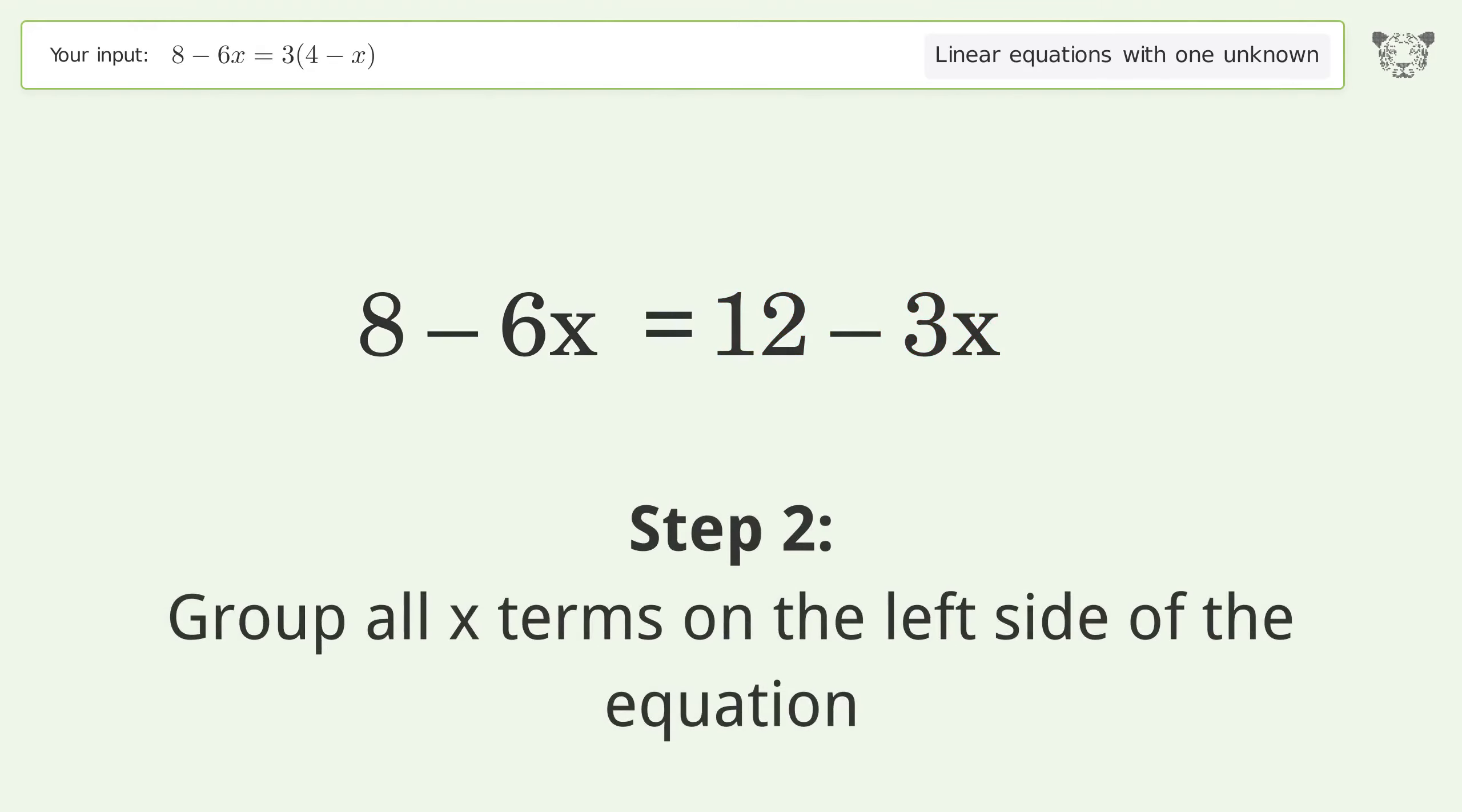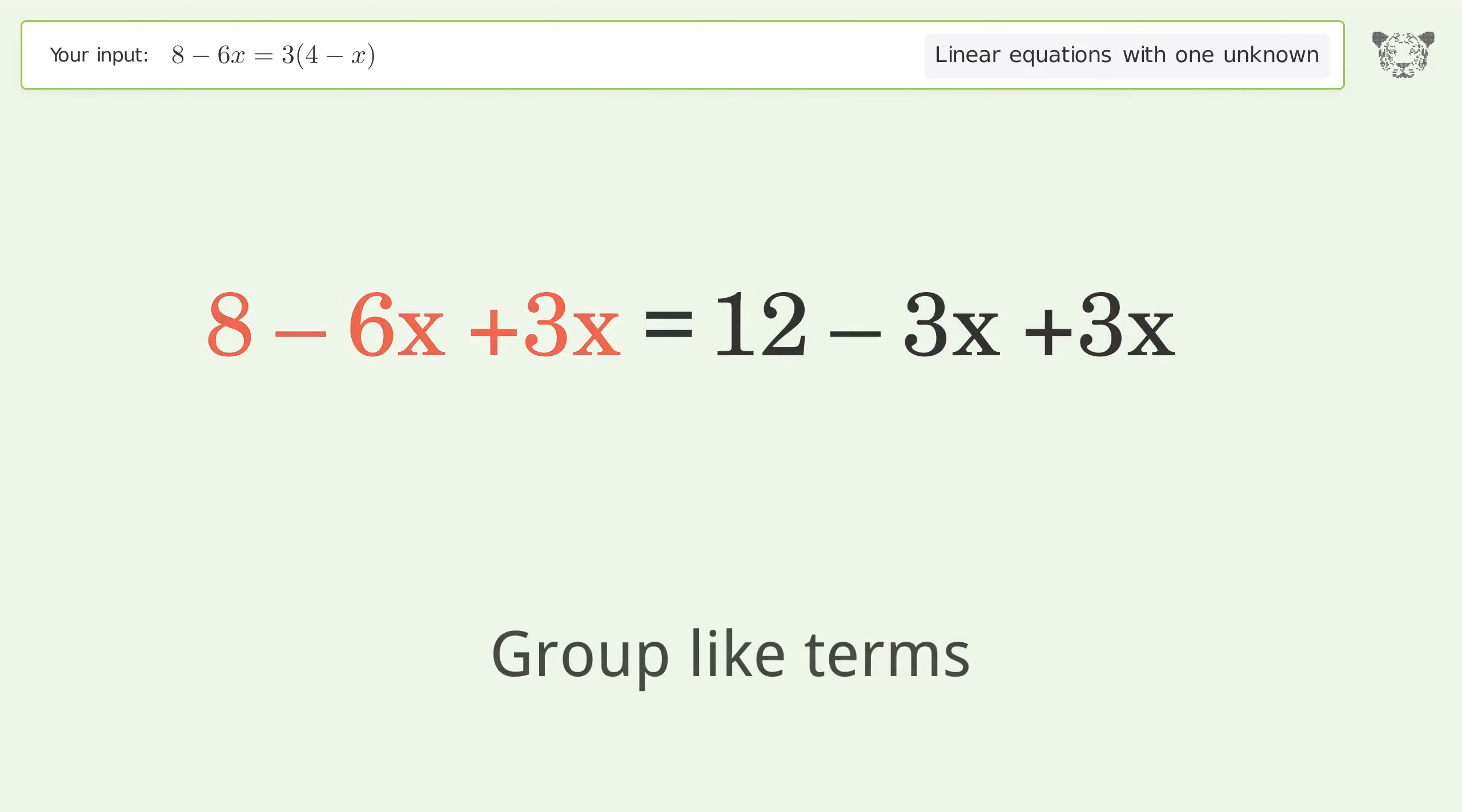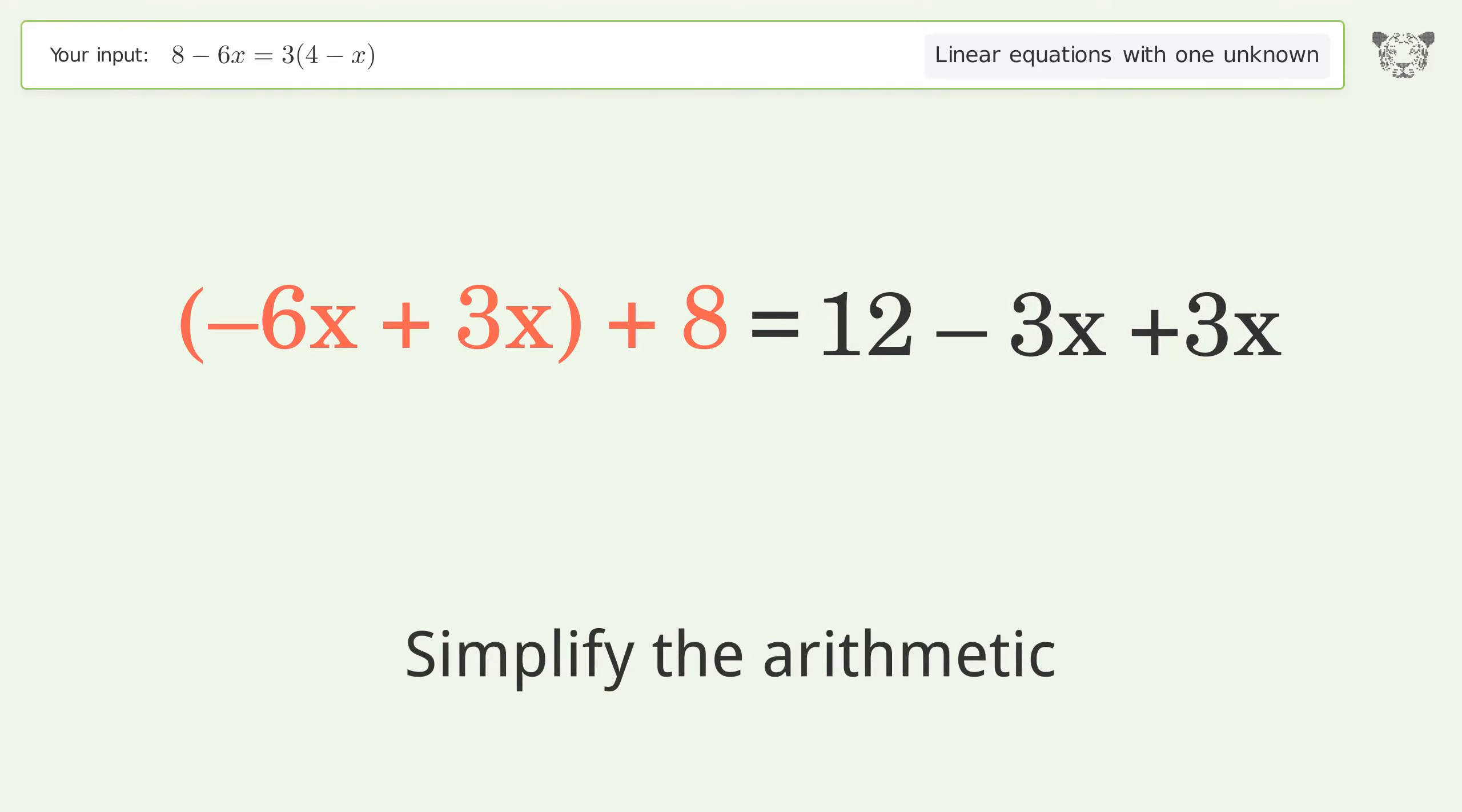Group all x terms on the left side of the equation. Add 3x to both sides. Group like terms. Simplify the arithmetic.